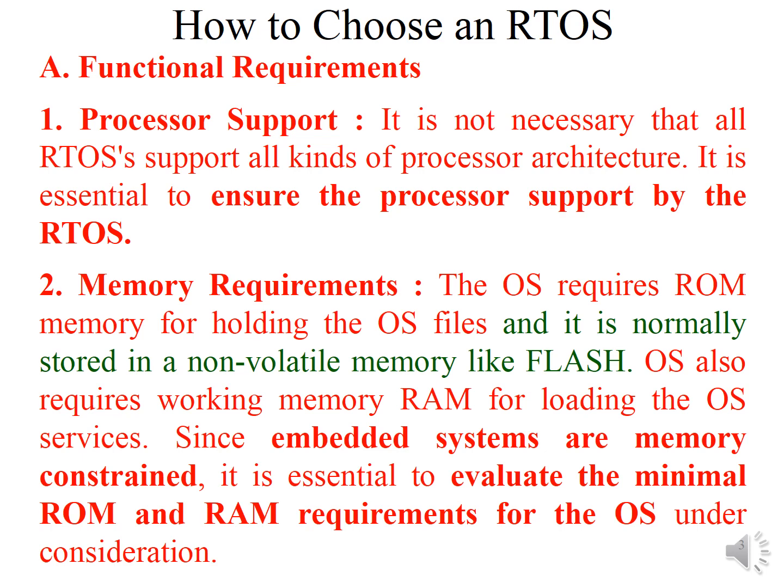The second functional requirement is memory requirements. An OS requires ROM for holding the OS files, and when the embedded system is in operation, the OS also requires working memory known as RAM. RAM is used for loading OS services — so the OS requires both RAM and ROM. Since embedded systems have limited memory, the system must satisfy the minimal RAM and ROM requirements of the OS; otherwise, that OS will not be suitable.